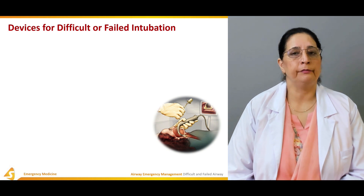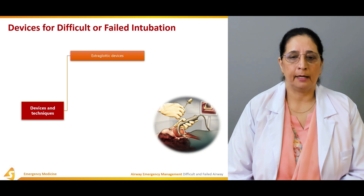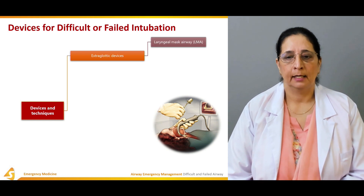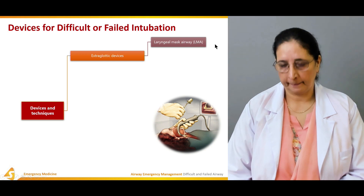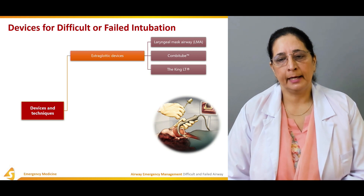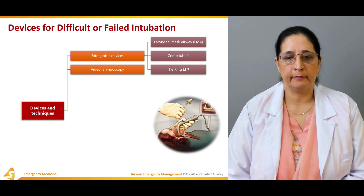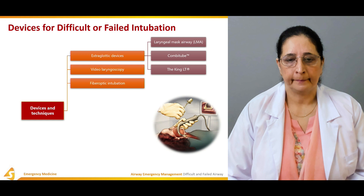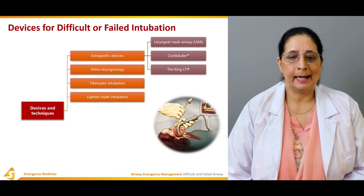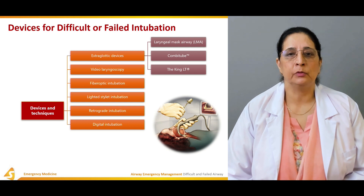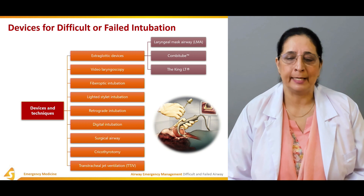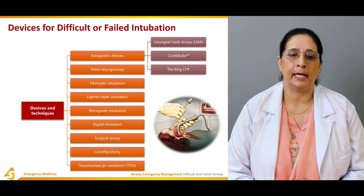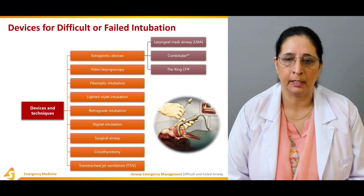Devices for difficult or failed intubation include extraglottic devices such as laryngeal mask airway (LMA), combi tube, and King LT laryngeal tube. Additional techniques include video laryngoscopy, fiber optic intubation, light stylet intubation, retrograde intubation, digital intubation, surgical airway, cricothyroidotomy, and transtracheal jet ventilation. These are all the devices and techniques used for failed or difficult intubation.